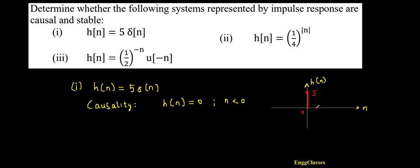At n equal to 1, n equal to 2, I don't get anything. Similarly, at n equal to minus 1, minus 2, its amplitude is 0. So this is impulse signal.